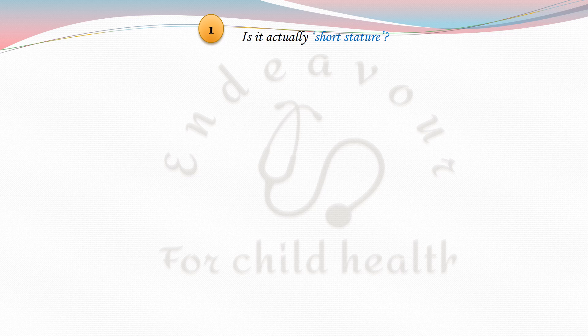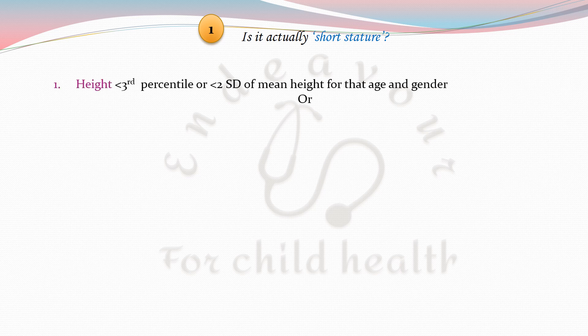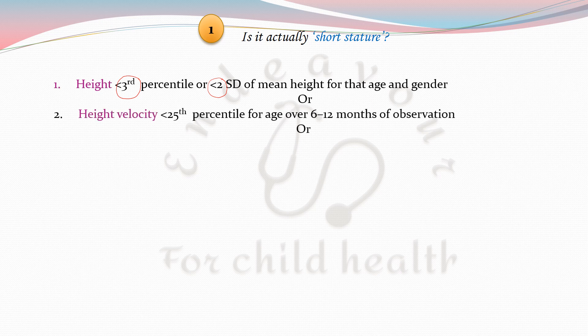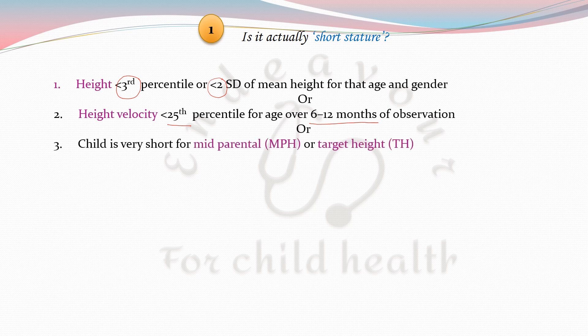Short stature can be defined on the basis of three parameters. The first is height less than the third percentile or less than two standard deviations of mean height for that age and gender. The second parameter is height velocity, which should be less than the 25th centile for age over a 6 to 12 month observation period. The third is if the child is very short for mid-parental height or target height.